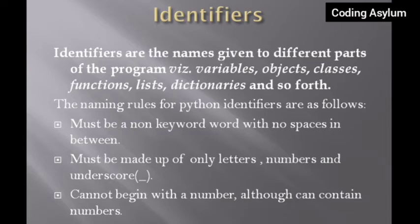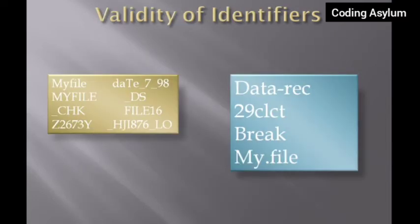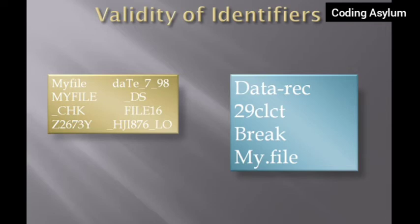The third rule is that an identifier cannot begin with a number. Although an identifier can contain numbers, it should not begin with one. On screen you can see two text boxes — the brown box on the left contains valid identifiers, and the blue box on the right contains invalid identifiers. The first invalid identifier is 'data-rec', which contains a hyphen. An identifier can only contain an underscore, not a hyphen, so it is invalid.